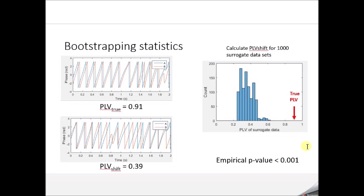For coherence, we have a single PLV from that analysis. To perform a statistical test, we use bootstrapping. We have two coherent neural signals A and B with a true PLV of 0.9. We create a null distribution of PLV values by randomly shifting one time series with respect to the other. In the bottom plot, the blue phase time series is the same but the orange time series is shifted backward by about one second.